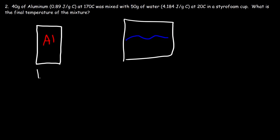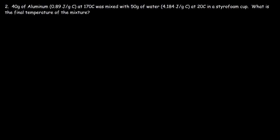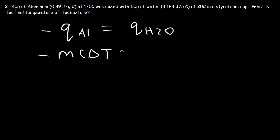The temperature of the aluminum metal is 170 degrees Celsius and the temperature of the water is 20 degrees Celsius. So once we place the aluminum metal in the water enclosed by the styrofoam cup, heat is going to flow from hot to cold — from the aluminum metal to the water. The setup is the same: the heat released by the aluminum metal equals the heat absorbed by water. Don't forget to multiply one side of the equation by negative one, giving negative mc delta T equals mc delta T.